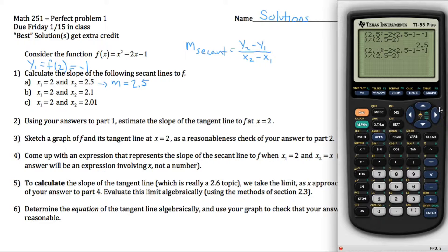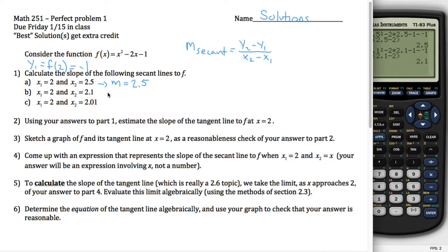Instead of 2.5 squared, I want 2.1 squared, instead of 2.5, I want a 2.1, and in the denominator, instead of 2.5, I want a 2.1. I hit enter, and it gives me 2.1.